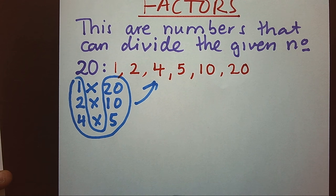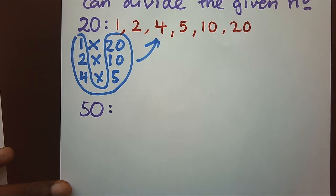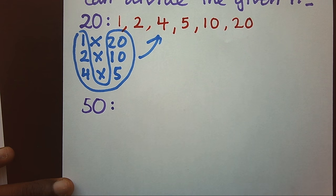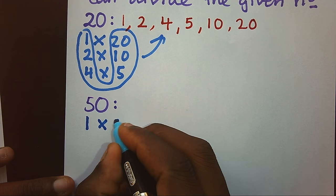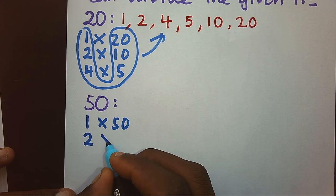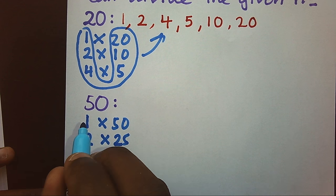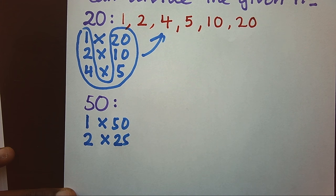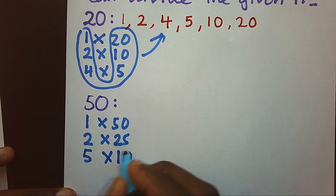Let's look at another example — we can take 50. Which numbers can divide 50? Using the pair method: 1 times 50 gives 50. 2 times 25 gives 50. 3 is not a factor. 4 gives a decimal, so no. 5 times 10 gives 50.